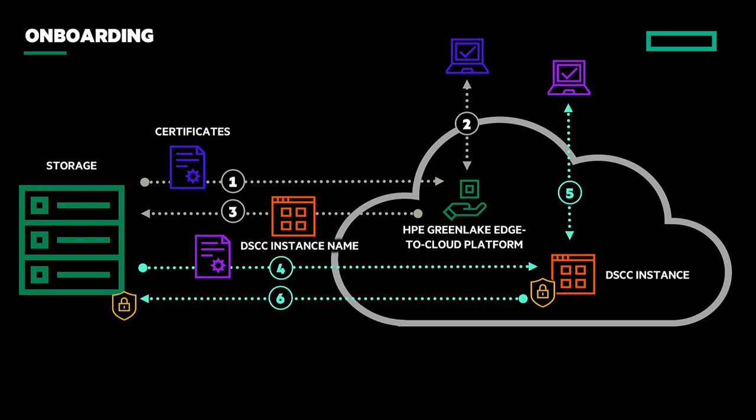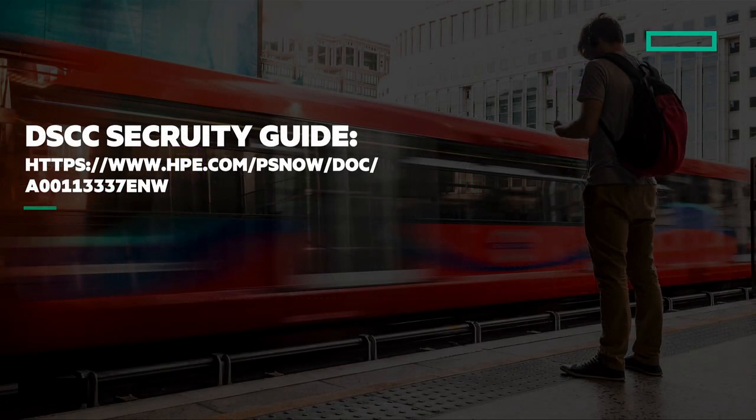One more thing to mention: your data written on the volumes will never be sent to DSCC. The only thing going across the wire is management data. It is sent on a periodic basis in the range of minutes, with sizes in the range of megabytes. If you are curious to learn more about DSCC security, please check out the technical whitepaper on the DSCC security guide. Thank you for watching.